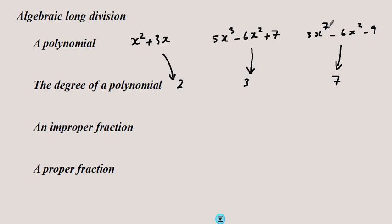What is an improper fraction in the world of numbers? An improper fraction is a fraction where the numerator is greater than or equal to the denominator. So for example, 7 divided by 5 is improper, 5 divided by 5 is improper, but 4 over 5 is proper.